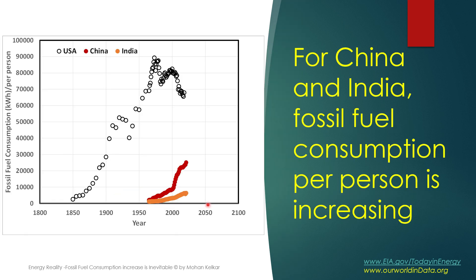And this is further confirmed by the fossil fuel consumption per person. In China, the fossil fuel consumption per person is increasing rapidly. In India also, a little bit slower, but personal consumption of fossil fuel is increasing. Although there is a big difference between USA per person consumption and China or India per person consumption, what is more important is the trend. In the USA, fossil fuel consumption per person is decreasing, but in both China and India, the fossil fuel consumption continues to increase per person.